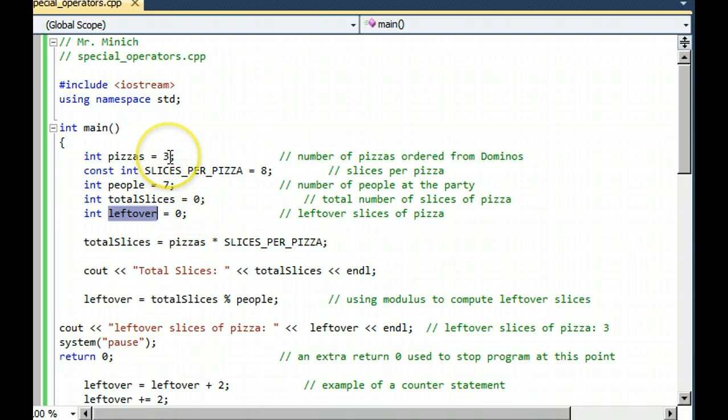I set pizzas equal to three just to keep it interesting. And here's a constant used in this program called slices per pizza. Notice that I always type constants in all uppercase letters, and you have to put the keyword const out there.